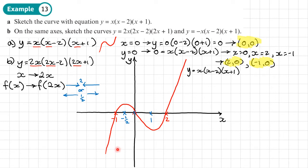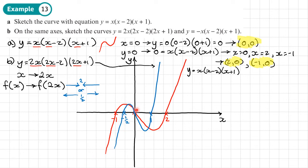Drawing the squashed cubic in blue through the new coordinates — (−1/2, 0), (0, 0), and (1, 0) — gives the same shape but squashed in the x direction. Importantly, the y direction remains unchanged, so it still reaches the same peak and trough heights as the original.